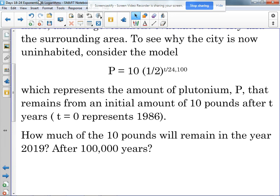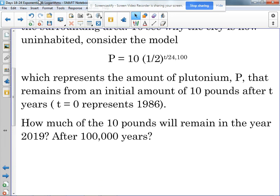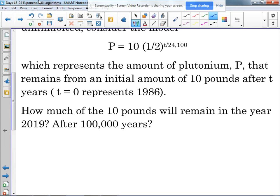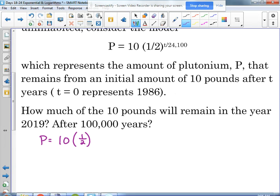So let's figure out how much of the 10 pounds will remain this year in 2019, and then after 100,000 years. So we are just plugging and chugging here with this first situation. If we plug it into the model, we've got 10 times the base is one-half. In the year 2019, we're not going to plug 2019 into the equation, right? Because T equals zero represents 1986.